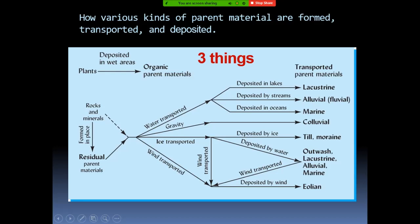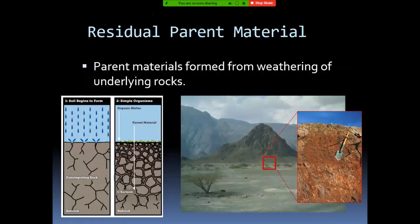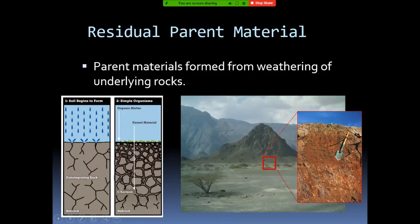So we have different names for parent material depending on the three things mentioned: the material itself, the means of transportation, and the place of deposition. If the rocks are formed and weathered at the same place, then we call it residual parent material. This is what happens when rocks undergo weathering and disintegrate, forming soil in situ — in place.